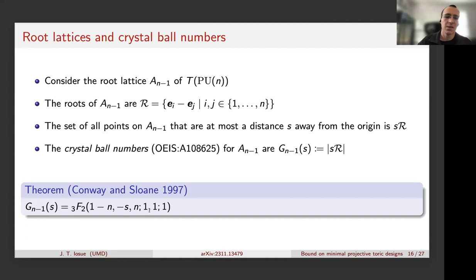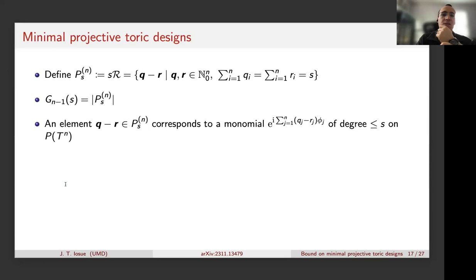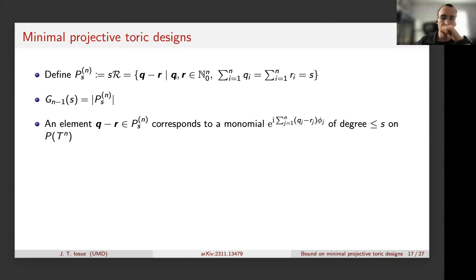Conway and Sloan proved that the crystal ball numbers have a closed-form expression given by a hypergeometric function, which can be written as a finite sum of binomial coefficients and similar terms. To place a bound on the size of a minimal projective toric design, we define the set P_{s,n} of all points on the root lattice at distance at most s from the origin, equivalently written as pairs (q, r) where q and r sum to s. The crystal ball sequence is the size of this set.